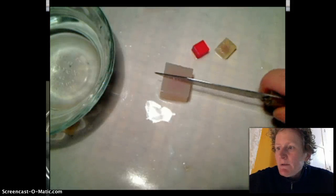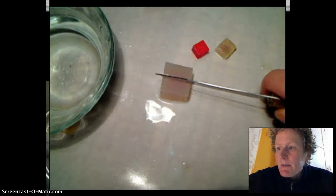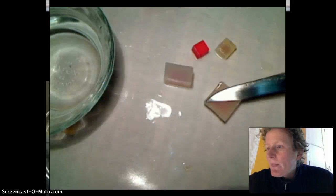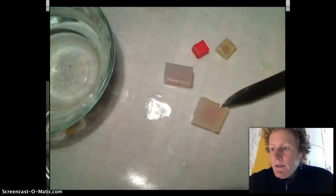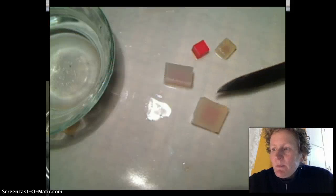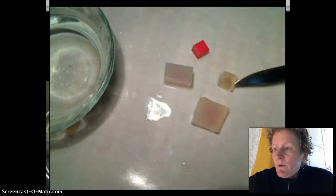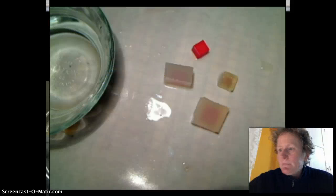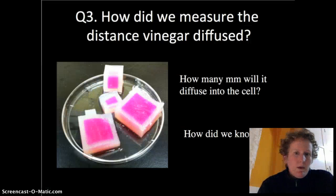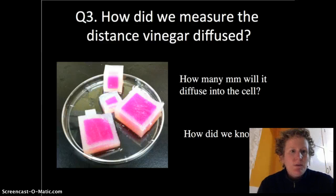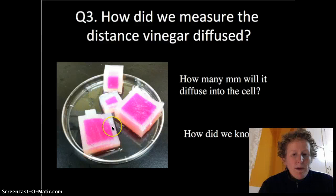While we're waiting for the vinegar to diffuse in the giant 10 by 10 by 10 centimeter cube, we can cut open a 2 by 2 centimeter cube for comparison. And you can see it made it about the same distance into the 2 centimeter cube as it did to the 1 centimeter cube. So question three, how did we measure the distance vinegar diffused? Well, we measured the distance of the white part of the cube.